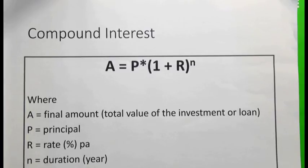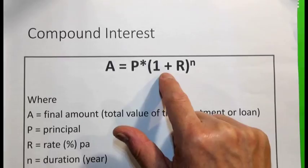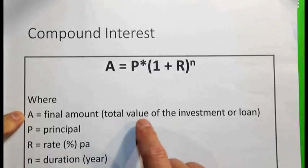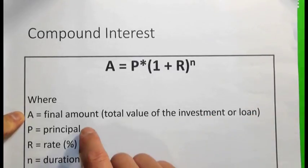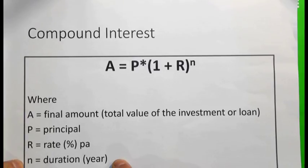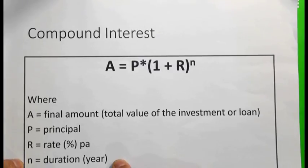We are considering compound interest yet again. Remember the compound interest formula: A equals P times (1 plus r) to the power of n, where A is the final amount or total value of the investment or loan, P is the principal, r is the rate per annum, and n is the duration. What we have done in the past is consider the interest being compounded annually. However, we need to consider situations where interest is compounded 6-monthly, 3-monthly, monthly, or even daily.